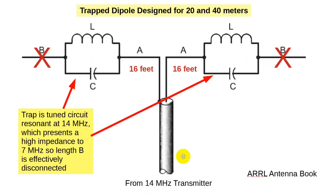The only part of the antenna the transmitter sees is part A on either side, up to the trap. This is why it's called a trap — the signal can't go any further. Length B is effectively disconnected.